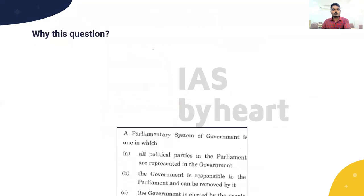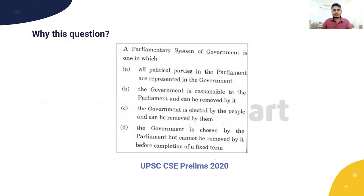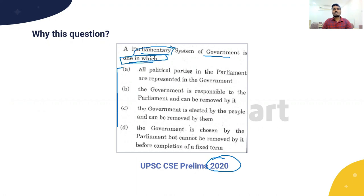If you go through the previous year's question papers, in the year 2020 there was a question from the parliamentary system: 'A parliamentary system of government is one in which...' with four options given. This question has been taken from very basic concepts of the parliamentary system of government. Based on this, we have formulated the democratic system of government question, which is clearly mentioned in our NCERT 11th standard book 'Indian Constitution at Work.'